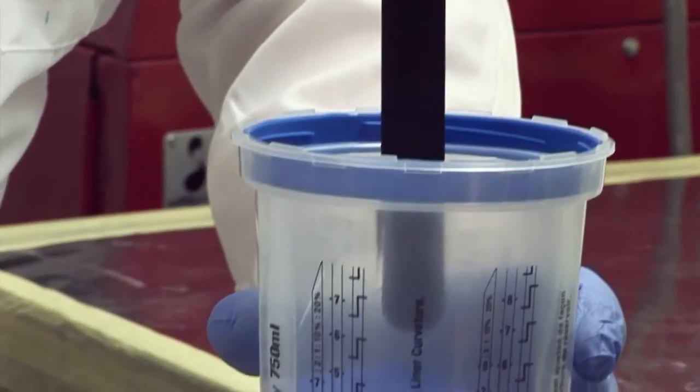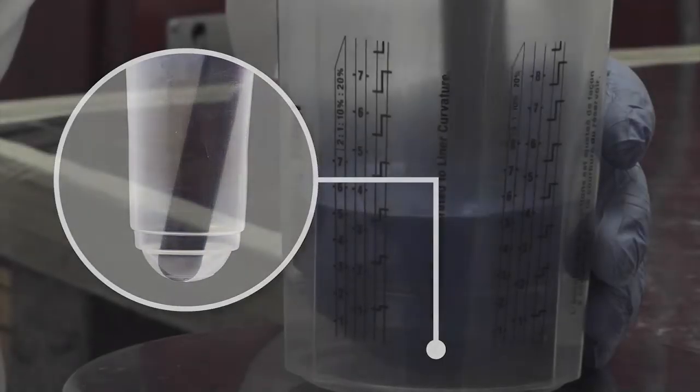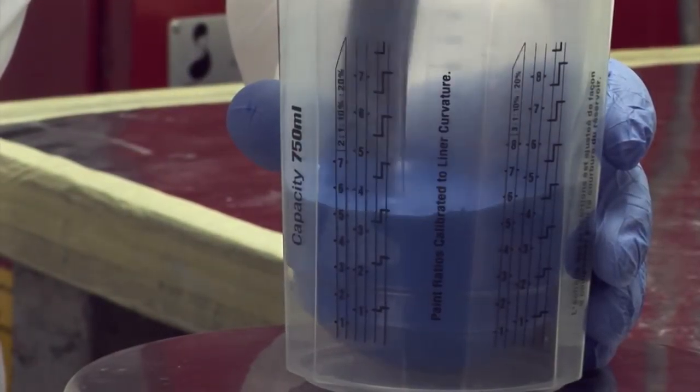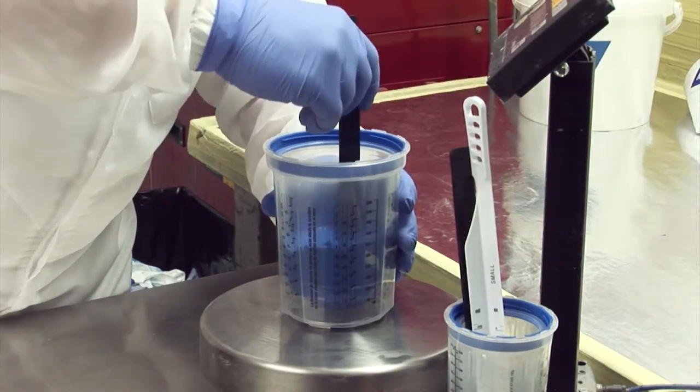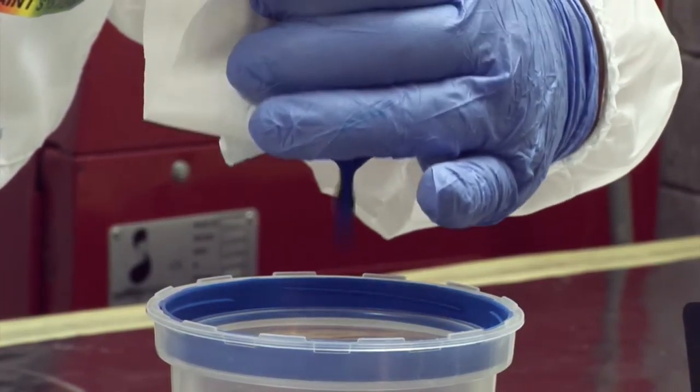Mix the paint using the curved end of the Norton mixing bar. It's specially designed to follow the contour of the liner for an even paint mix. When removing the mixing bar, lift in an upright position and wipe with a clean cloth.